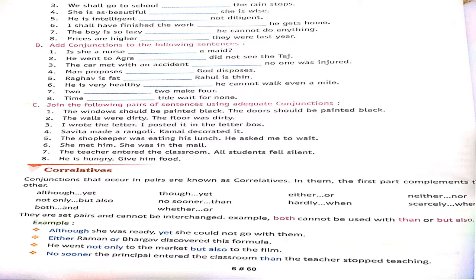Now, here we have correlatives. Correlatives are conjunctions that are used in pairs. Like: Although-Yet, Though-Yet, Either-Or, Neither-Nor, Not only-But also.